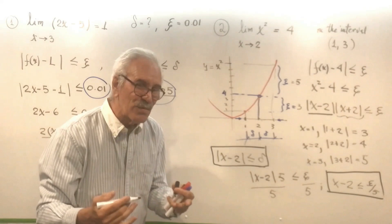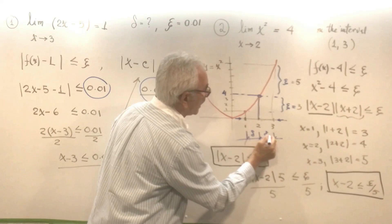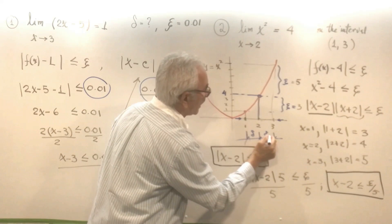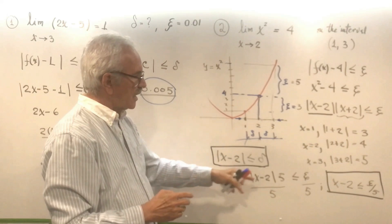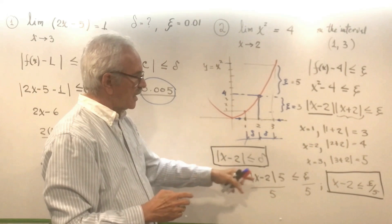We knew that epsilon would be 5 times larger than delta — and indeed that is what we found. This is very interesting: we now learned how to find the relationship between delta and epsilon, and how to demonstrate that the limit exists.